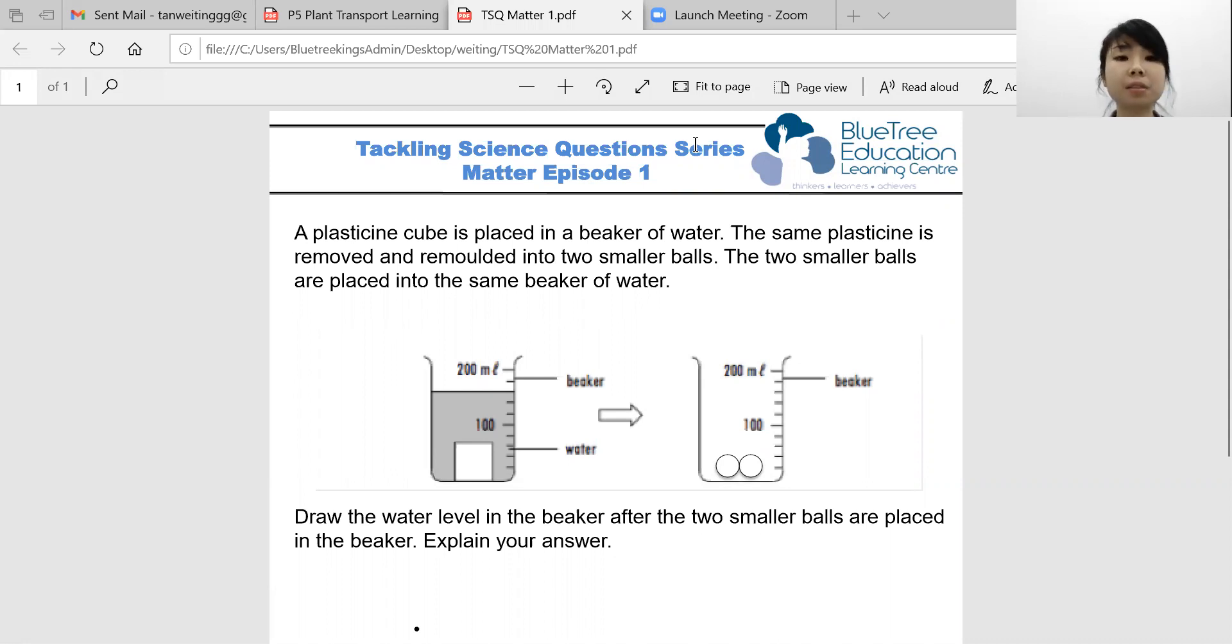So in this question specifically, a plasticine cube is placed in the beaker of water. And the same plasticine is removed and remolded into two smaller balls. The two smaller balls are then placed back into the same beaker of water, and the question wants you to draw the water level in the beaker after the two smaller balls are placed into the beaker and follow up with an explanation of how you came up with the water level.